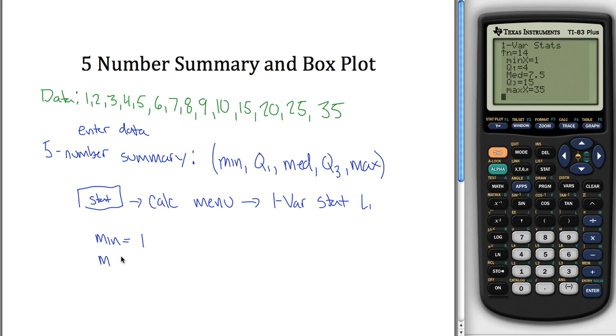The first quartile Q1 is equal to 4, the median is equal to 7.5, the third quartile Q3 is equal to 15, and the maximum is equal to 35.